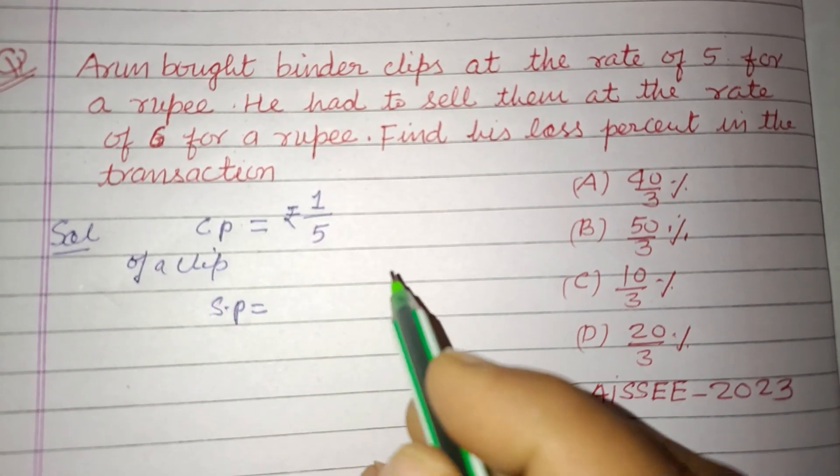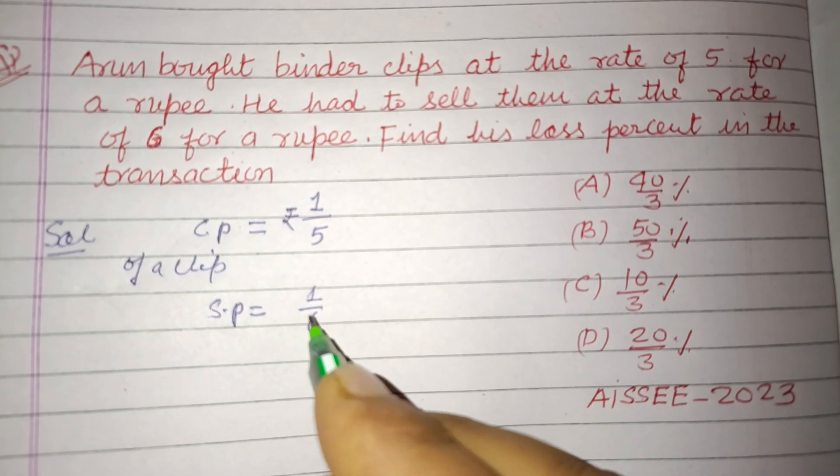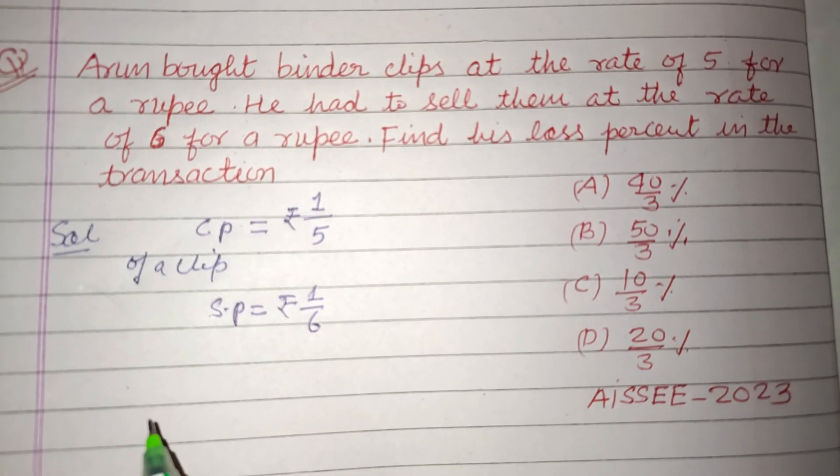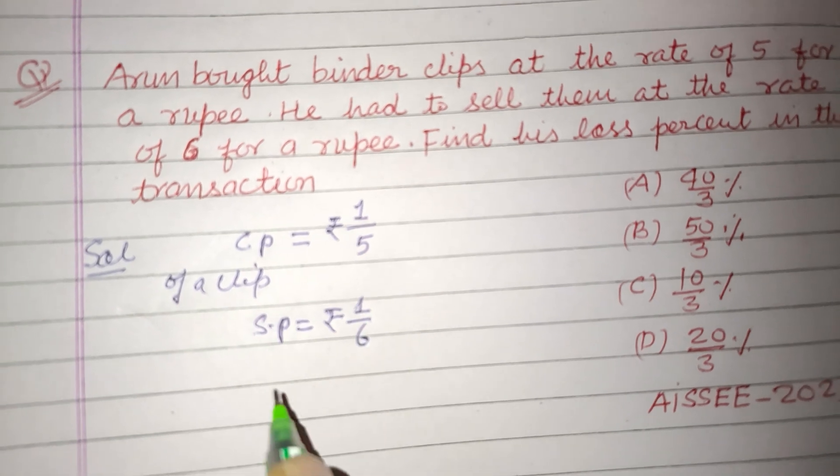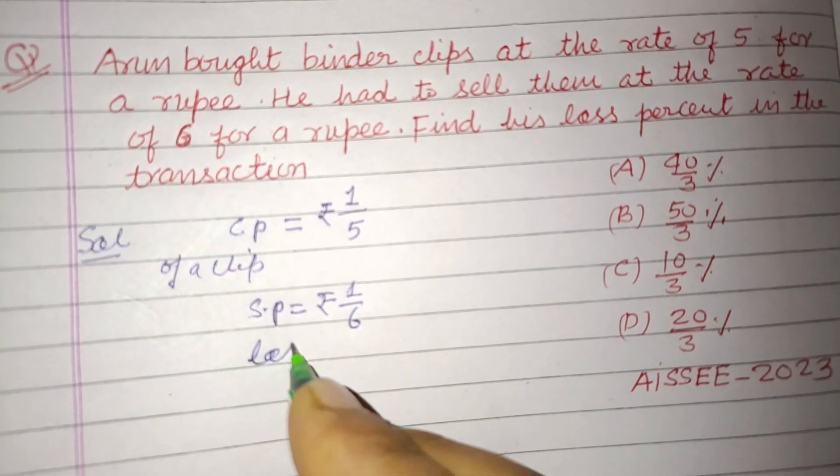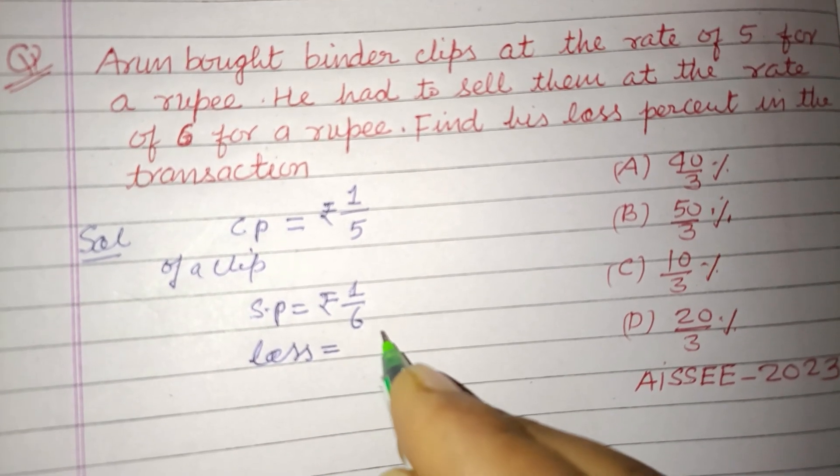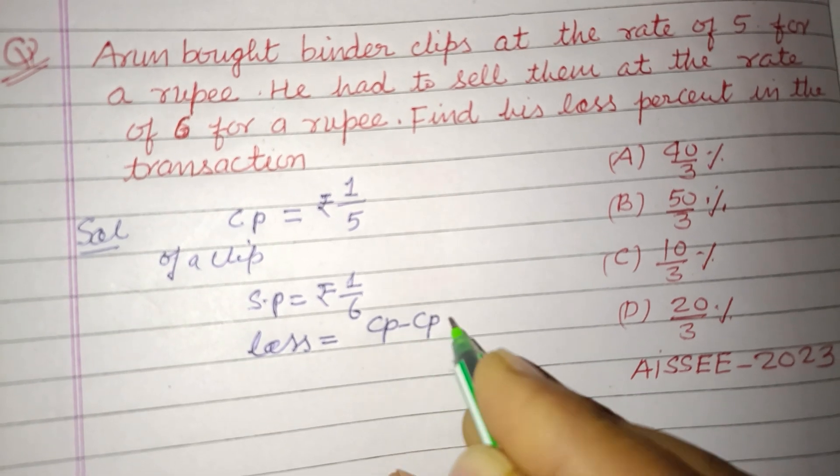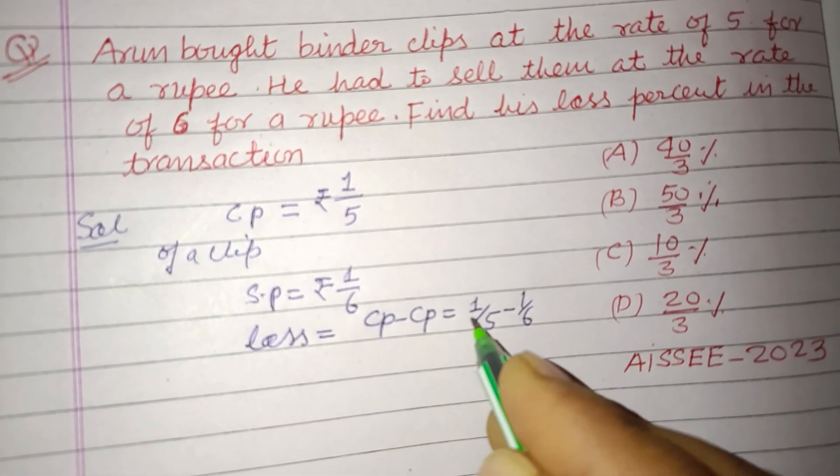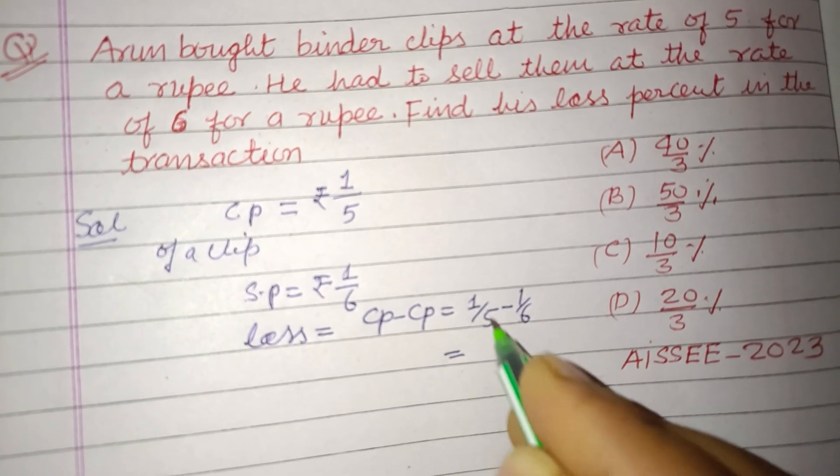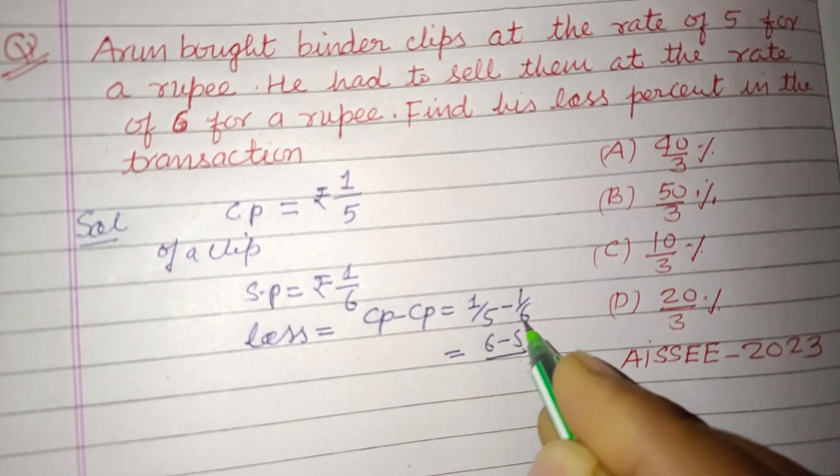as ₹1/6. So here SP is less than CP, so there's a loss. Loss equals CP minus SP, so this is 1/5 minus 1/6, and that is (6 minus 5) over (6 times 5), that is 1/30.